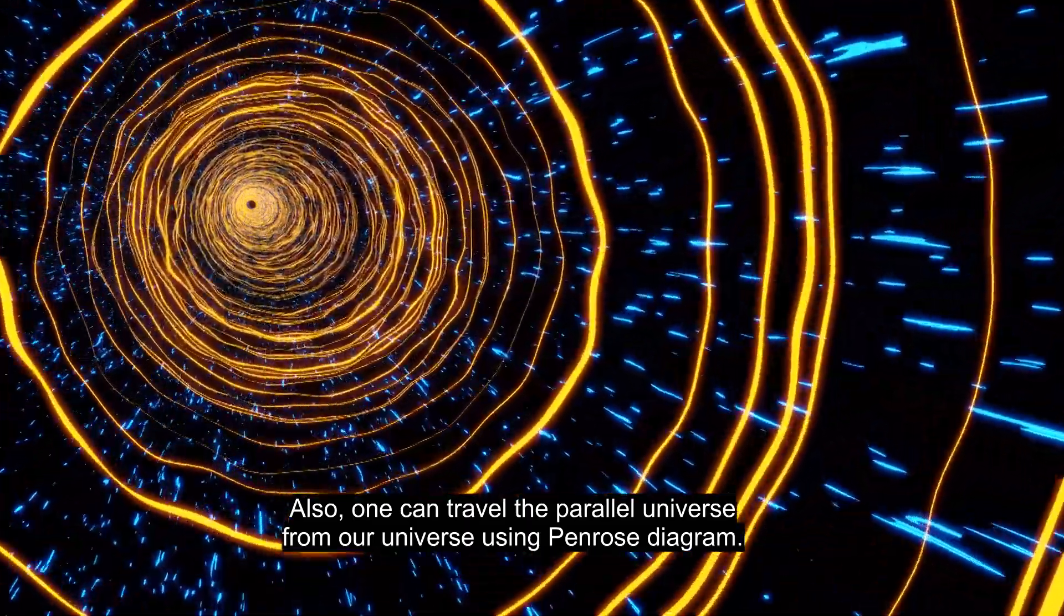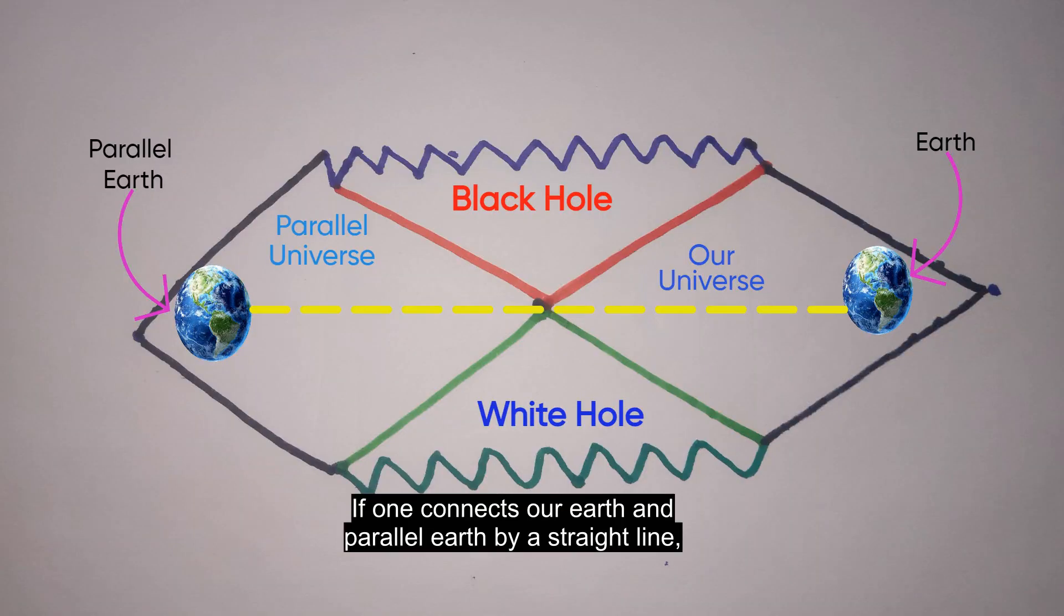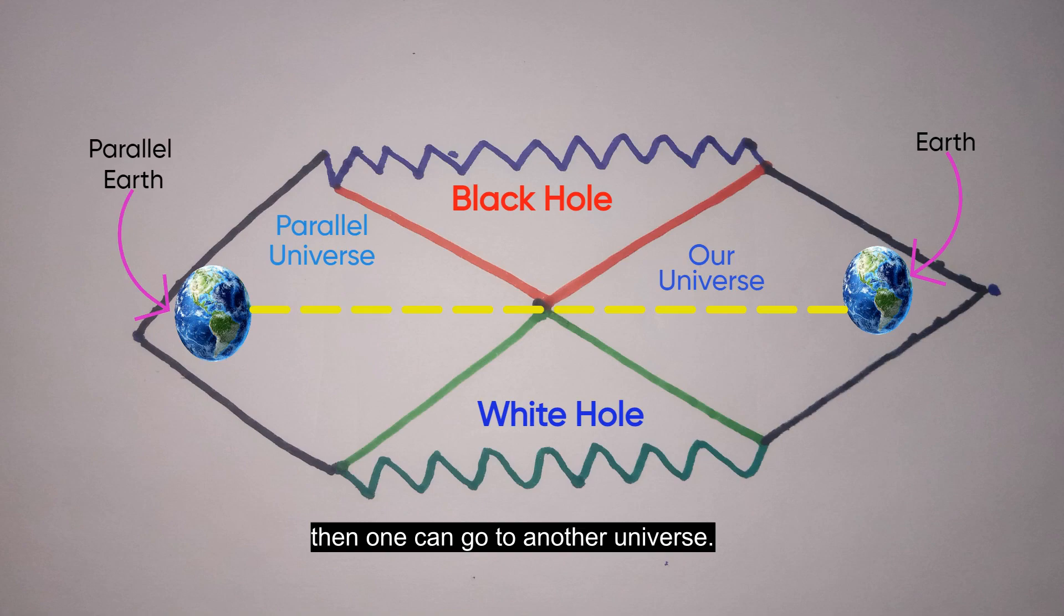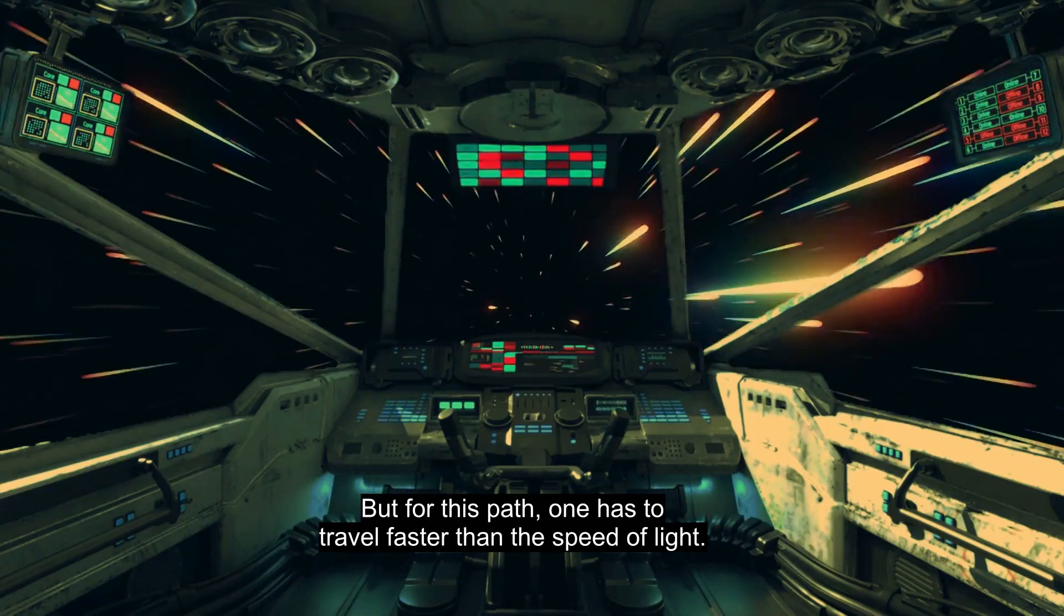Also, one can travel to the parallel universe from our universe using the Penrose Diagram. If one connects our Earth and parallel Earth by a straight line, then one can go to another universe. But for this path, one has to travel faster than the speed of light.